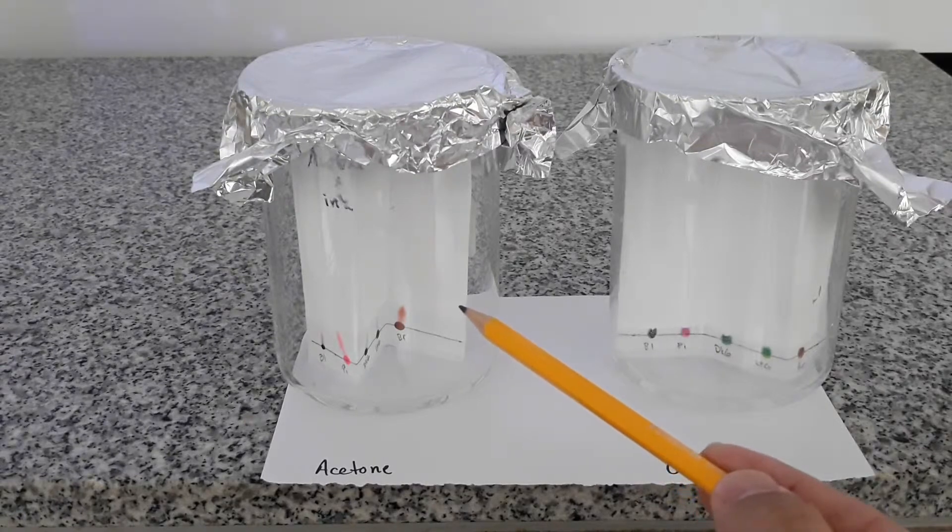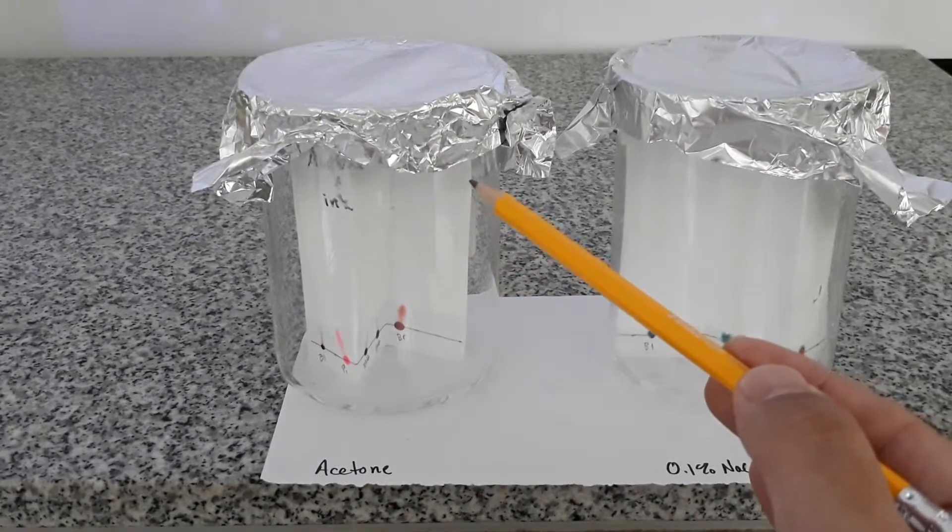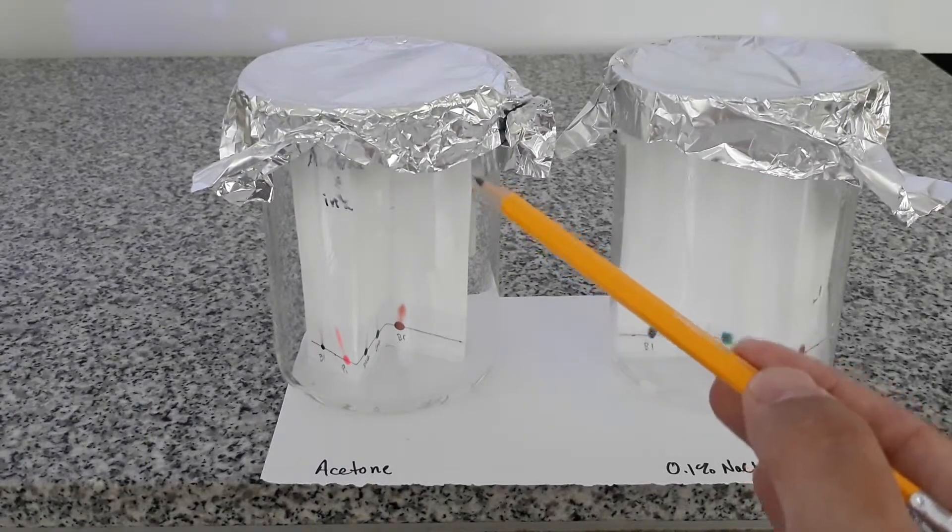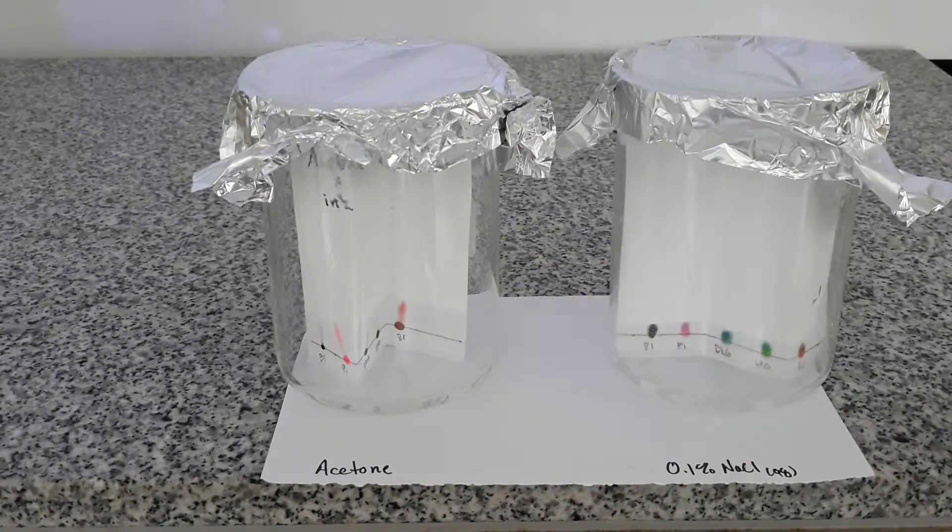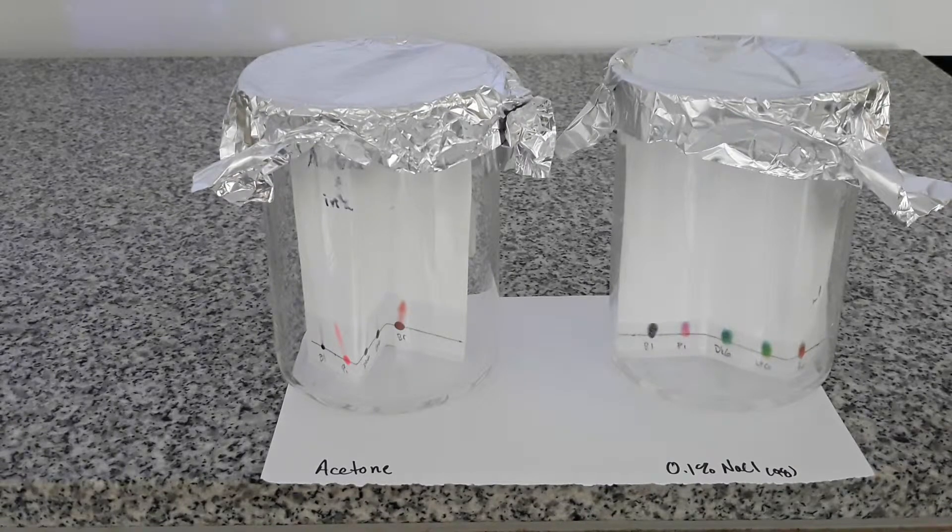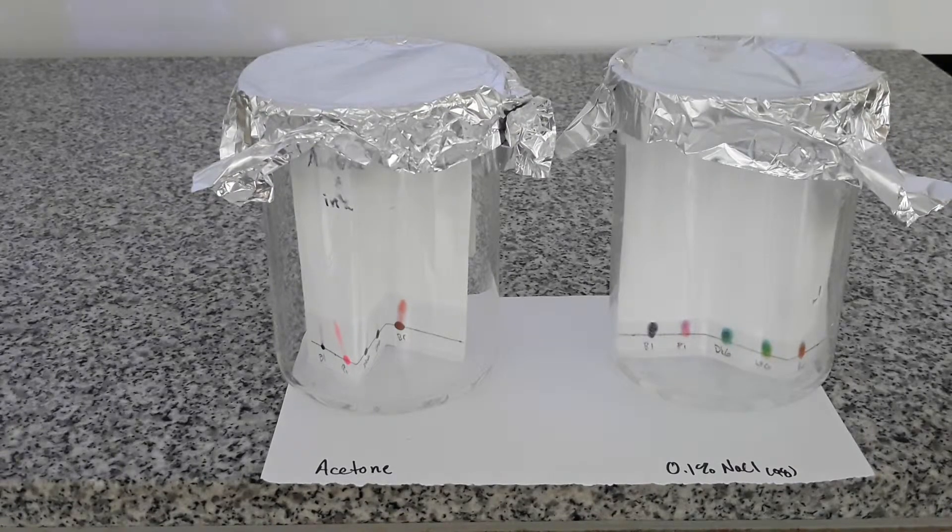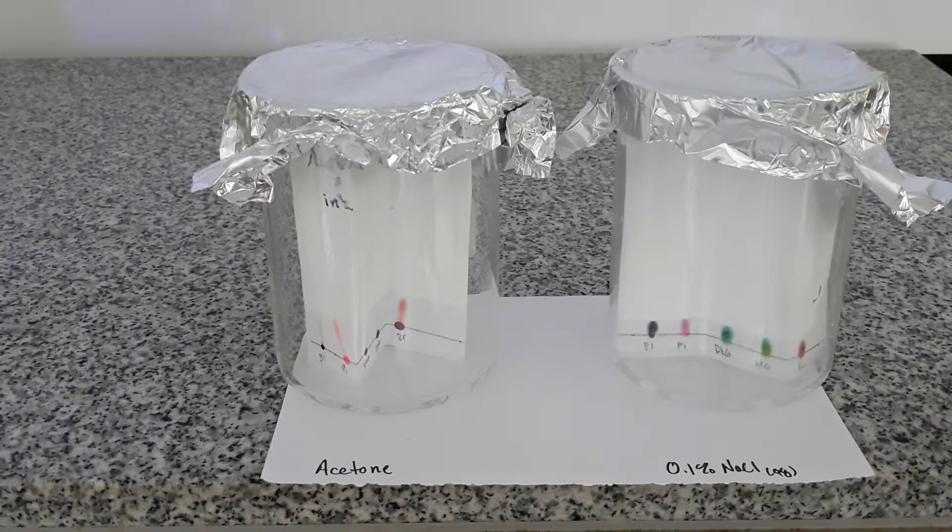So you can see the solvent front travel up the page and when it gets about two to three centimeters from the top is when you want to stop it. You do not want to let your mobile phase run off the end of your stationary phase or it becomes impossible to get correct measurements.